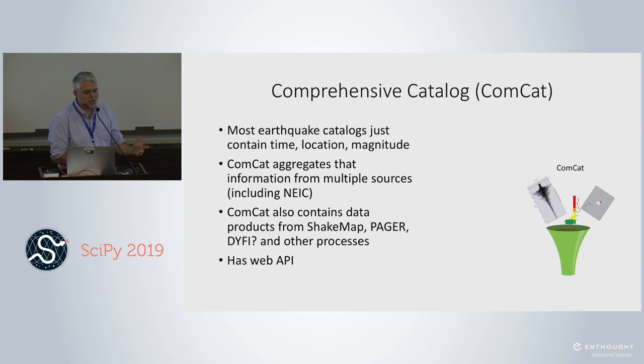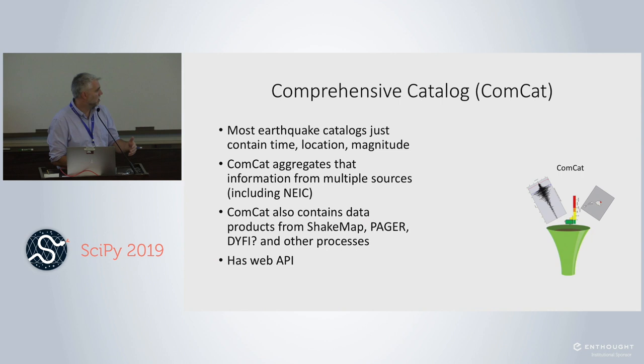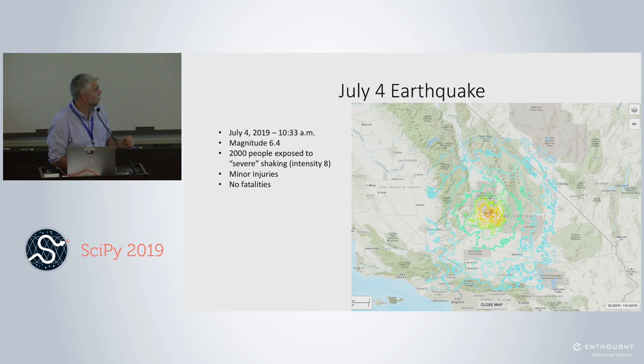ComCat — the Comprehensive Catalog — aggregates earthquake time, location, and magnitude from multiple sources including our own catalog, plus data products from ShakeMap, PAGER, Did You Feel It, and other technical systems. It has a web API developed by our web team, and I'm going to demo the Python wrapper around that API.